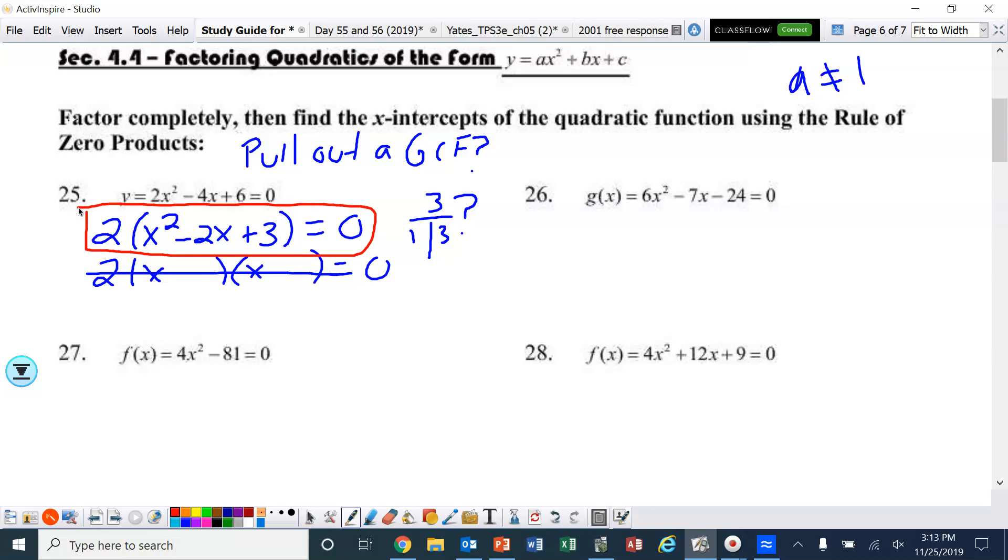All right, number 26. Again, first thing we're going to do is look to see is there a GCF. And I've got 6, 7, and 24. Okay, there's nothing I can pull out of that except a 1, and that doesn't mean anything. So what we're going to do now, some of you may use the guess and check method or whatever method your teacher taught you, but I am going to use the box method. So if you don't know the box method and you want to learn the box method, okay, pay really close attention. The box method allows you to solve it without any guessing or checking.